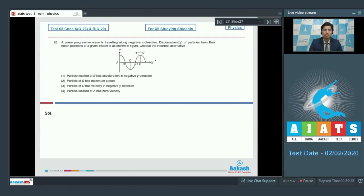Dear students, let us try to analyze each option by itself. First option says that the particle located at e has an acceleration in the negative y direction. This is the particle that has been talked about. We can see that the displacement of the particle is in upward direction and the acceleration therefore should be in downward direction as the acceleration would be opposite to the displacement from the mean position. Therefore, statement 1 is correct and cannot be our answer as we have to choose the incorrect alternative.